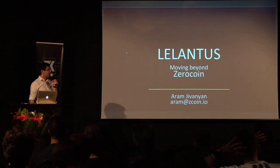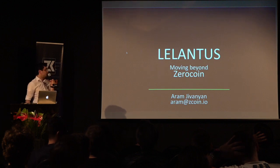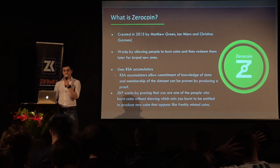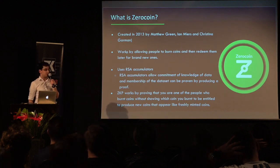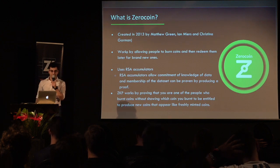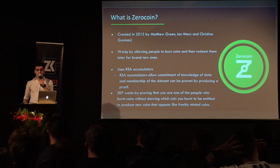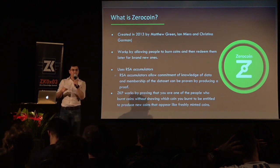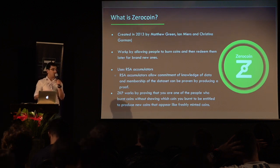We will discuss today Lelantus, a new private transaction protocol that I have been working on during the last few months and which will come to Zcoin networks early 2020. Zcoin is a privacy coin, mostly adopted in the Asian markets, which is using the Zerocoin protocol invented by Ian Mears and Matthew Green in 2013. Zerocoin uses RSA accumulators and enables users to mint coins of fixed denomination and then spend those coins anonymously and provide some zero-knowledge proof that the spent coin is valid without revealing its origin.